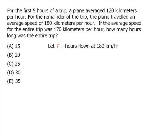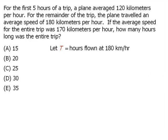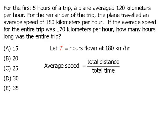To begin, let's let T equal the total number of hours flown at 180 km per hour. The average speed of our trip will be equal to the total distance traveled divided by the total time spent traveling. We're told that the average speed is 170 km per hour.